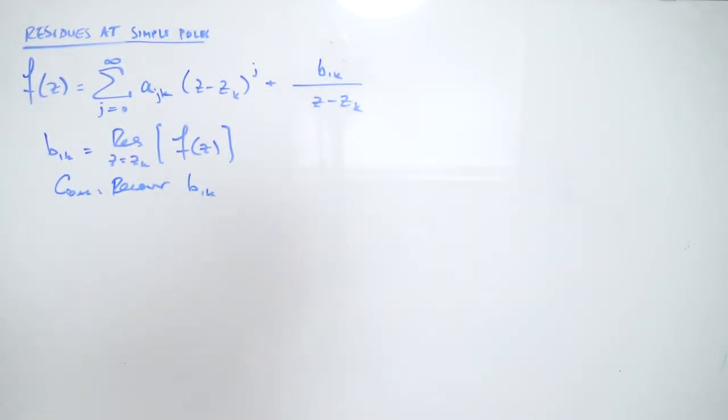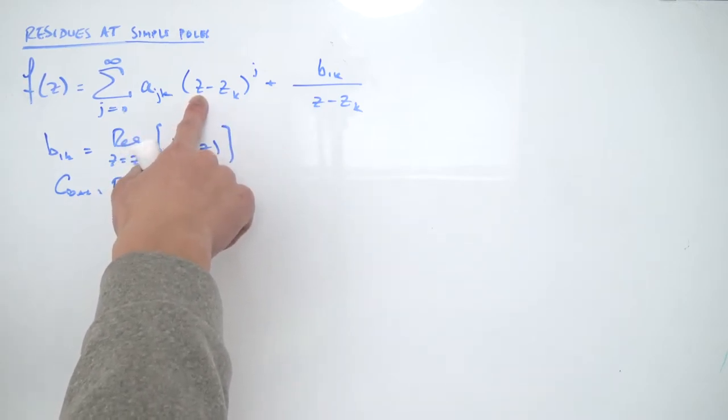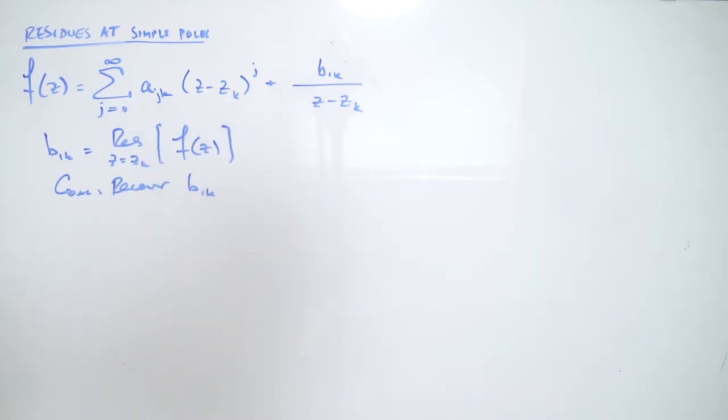So how can we recover this coefficient? Well, we don't really want any of this stuff from the analytic part. Ideally, we would want all that to be equal to zero. So how can we make it zero? Well, notice if we plug Z equals Zk into here, we're gonna get Zk minus Zk, which is zero. So if we make that substitution, this whole analytic part goes to zero.